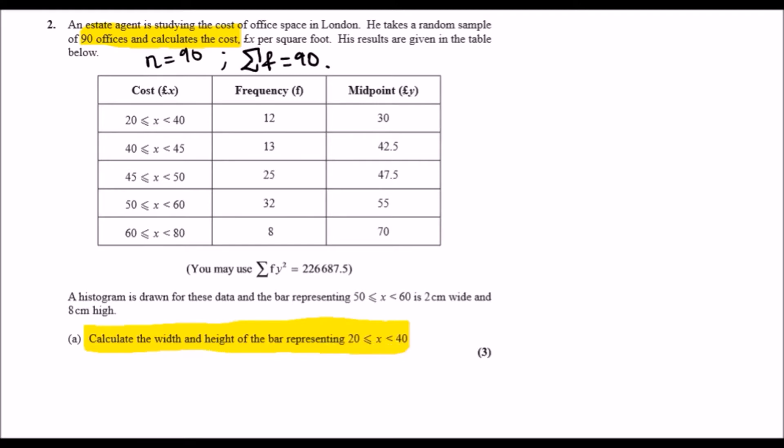So my advice for every histogram based question, I would just draw a little sketch on the side and label the x-axis the class width, representing in this case the cost, and the y-axis the frequency density. This represents the height.